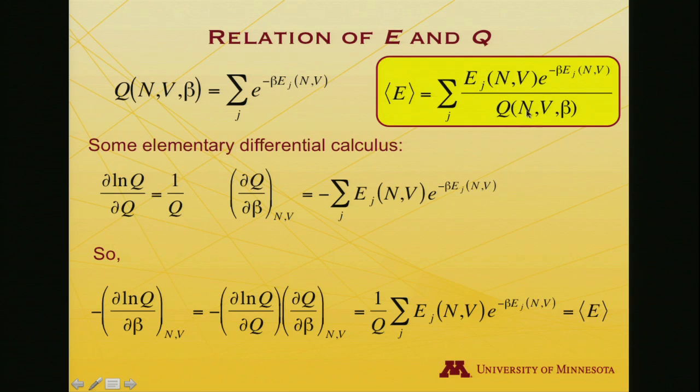Notice that's that: here we have 1 over Q, and energy times e to the minus beta Ej. So the expectation value of the energy is minus the partial derivative of the log of the partition function with respect to beta. That's a key formula of statistical thermodynamics that we'll want to keep in mind and explore its utility.